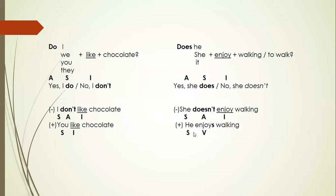Pero cuando el verbo está conjugado en tercera persona, recuerden que tenemos que hacer unos cambios a la terminación del verbo. Le podemos poner S, ES, o IES. En este caso el verbo termina con Y, pero antes del Y hay una vocal, entonces a esto se le agrega nada más una S, cuando va conjugado con he, she, or it. Y esta es la fórmula para hacer las yes/no questions, para hacer una oración en negativo y en afirmativo.